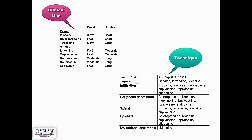Regarding onset and duration of action for esters: procaine has a slow onset and short duration; chloroprocaine has a fast onset and short duration; tetracaine has a slow onset and long duration. In case of amides like lidocaine and bupivacaine, the onset is fast and the duration is moderate. Based on technique, for topical application, the appropriate drugs are cocaine, tetracaine, and lidocaine.